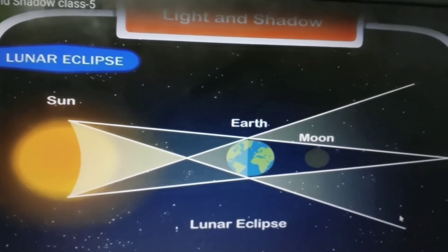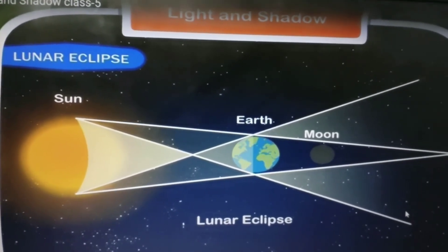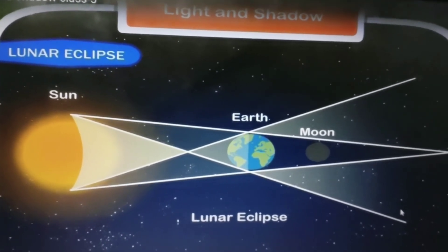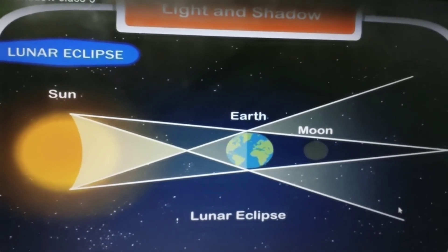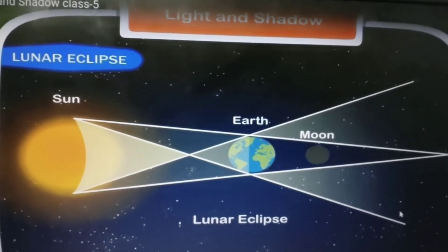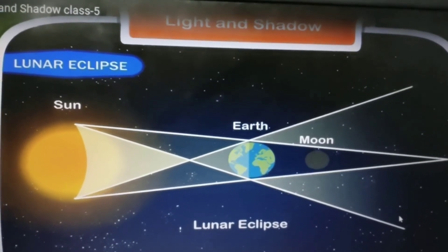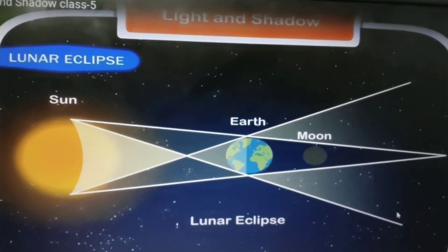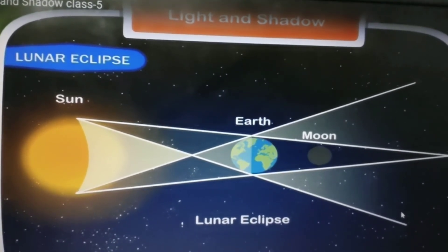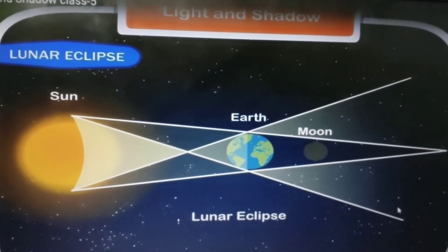This kind of eclipse is known as a lunar eclipse. It occurs on full moon night. When the earth's shadow completely covers the moon, it is known as a total lunar eclipse. If it covers the moon partially, then it is known as a partial lunar eclipse.